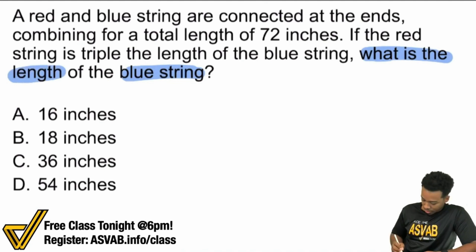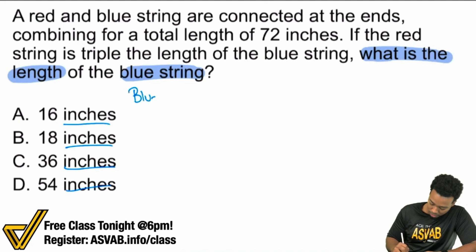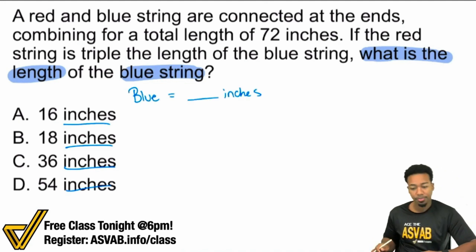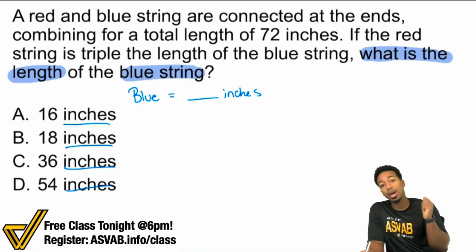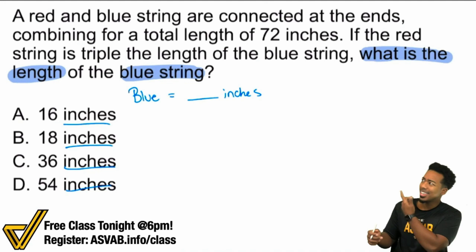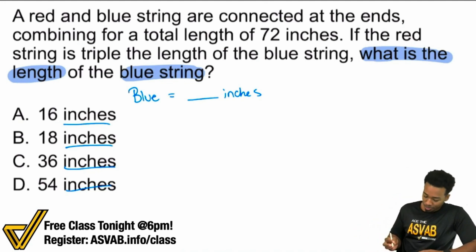Length of the blue string right there. That's what we want. So we want blue string and it says inches here. We'll say blue string equals blank inches. Just like that. Now, what's going to come up next? Once you ask what is it that I want with the question, now you're going to ask, what information do I have? What's here that's going to help me really lay everything out and make a plan? So now let's go ahead and read through it here. A red and blue string are connected at the ends, combining for a total length of 72 inches.